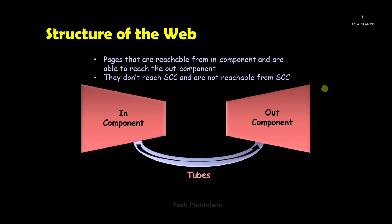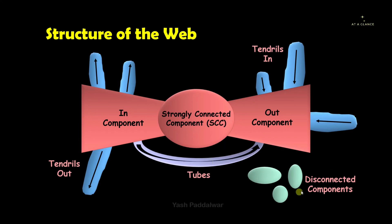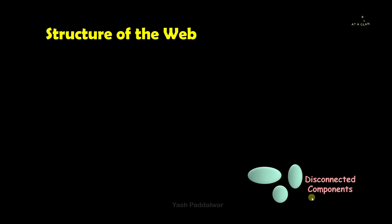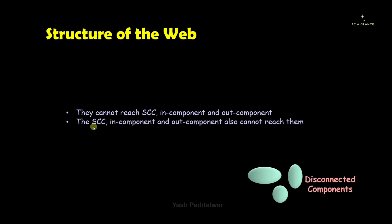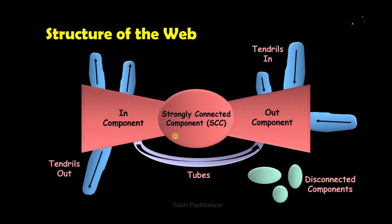The final component is the disconnected components. They cannot reach the strongly connected component, the in component, or the out component, and in return none of those components can reach them — they are isolated. For example, a static isolated website that doesn't have any link to any other website, and no other website has a link to it. It is completely isolated: it cannot reach other websites, and other websites cannot reach it.